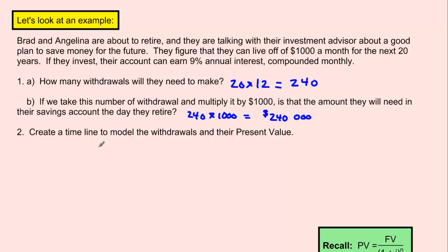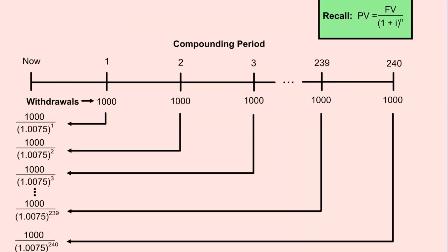So what we're going to do is figure out how much money they need to invest today so they have enough to pay that $1000 240 times. Let's first start by creating a timeline to model what the withdrawals look like. And here we have it. You can see at the top of the timeline we have our compounding periods. So if we start with today or now, we're going to have 1, 2, 3, all the way to 240 different compounding periods, and each of these periods is a month. Each compounding period, instead of making a deposit, we're actually now making a withdrawal. So we're going to take $1000 each compounding period. But what we want to know is how much is this $1000 that we're going to need to pay out in the future worth to us today.